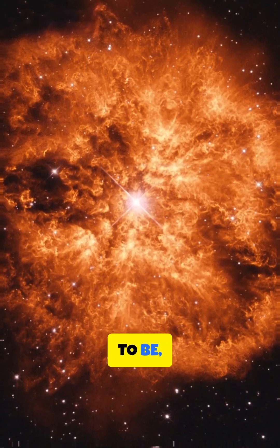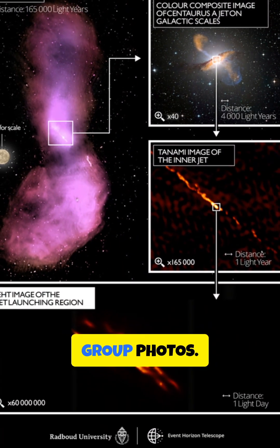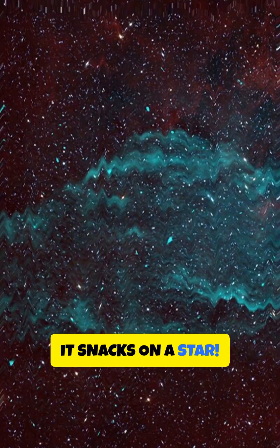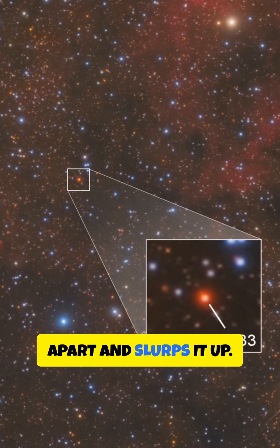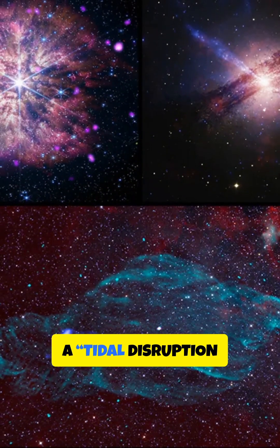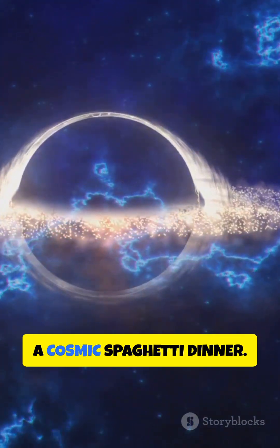Not at the center where it's supposed to be, but off to the side like it's avoiding group photos. And what does it do? It snacks on a star. Like, literally rips it apart and slurps it up. Scientists call this a tidal disruption event, but I call it a cosmic spaghetti dinner.